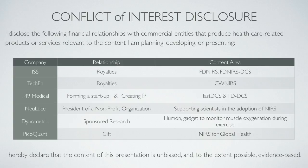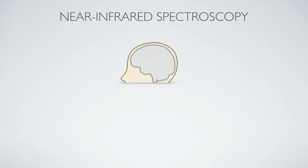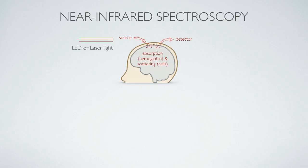This comes with a lot of conflict of interest, but this talk will be evidence-based and unbiased. Near-infrared spectroscopy — for the few people that may not know the technology — uses laser or LED light in the 600–900 nanometer spectrum region to illuminate tissue, and a few centimeters away we detect the attenuation of light due to absorption and scattering.